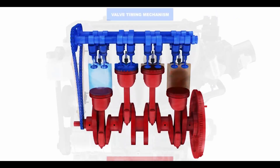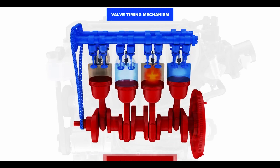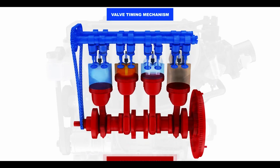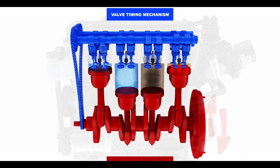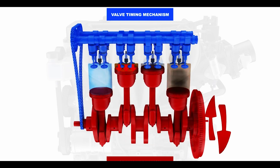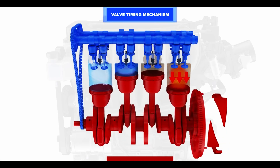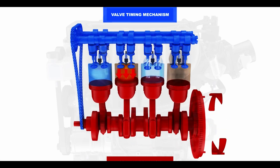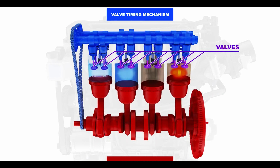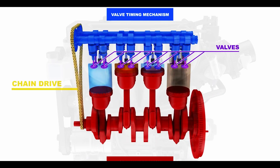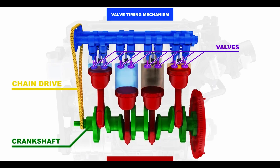We can now see the crank mechanism and the valve timing mechanism. The crank mechanism is propelled by the energy released during fuel combustion and converts such energy into rotational mechanical energy. The valve timing mechanism is needed to open the inlet and exhaust valves. It can be put in motion by gear, belt, or chain drive from the crankshaft.